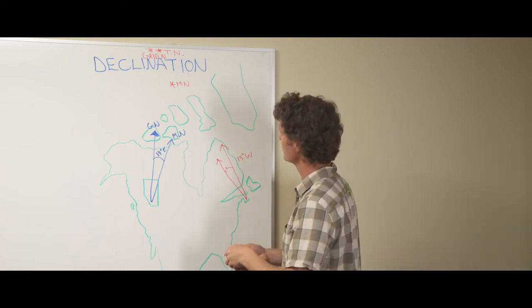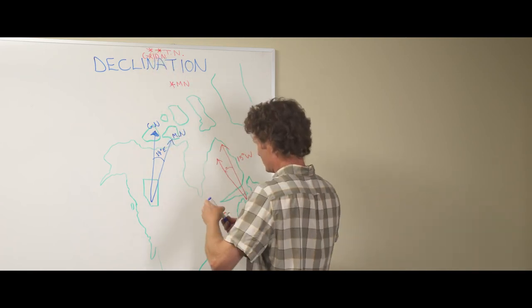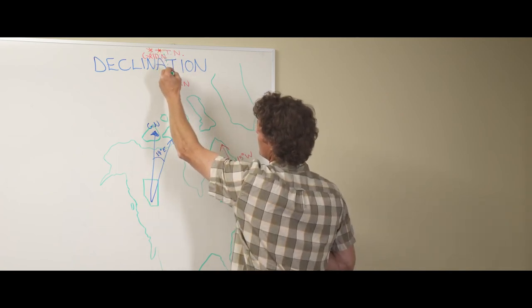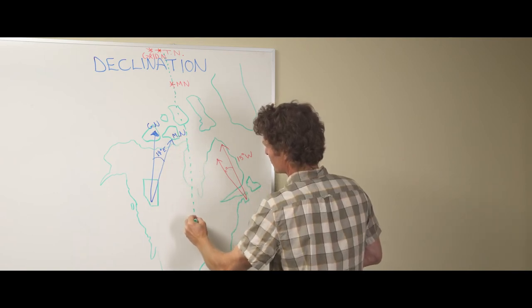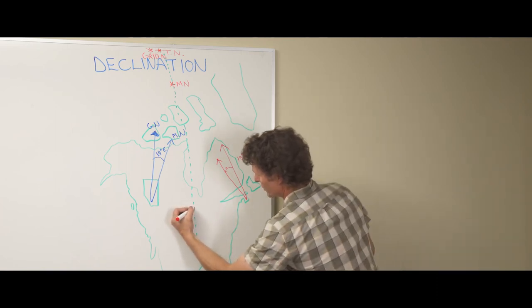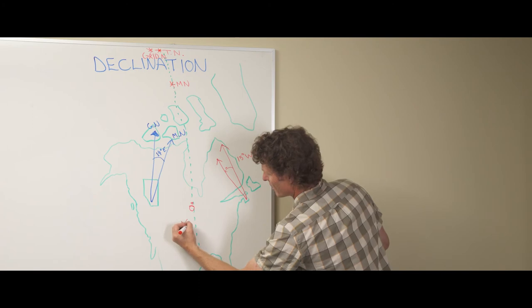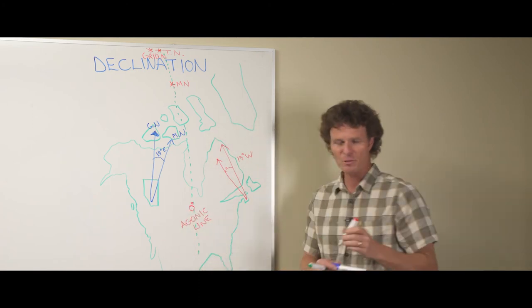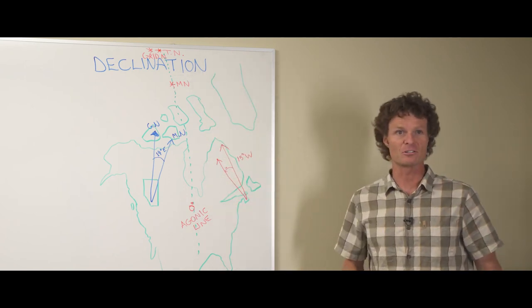There is a spot down the middle here. If you were to imagine a line running all the way through here, so a line from true north through magnetic north, and all the way down like this. On this line, it is zero degrees declination, and this is known as the agonic line. So if you happen to be lucky enough to be on that line, you actually don't need to think about declination.